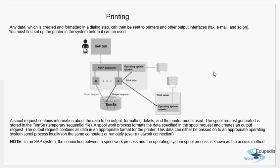If the operating system spooler is on the same host as the SAP system, the spool work process uses a local access method. If the operating system spooler is on a different host, the spool work process connects remotely using a remote access method. The connection between a spool work process and the operating system spool process is called the access method. The output request can be printed, faxed, or sent as email from the operating system. That concludes the spool work process for printing.